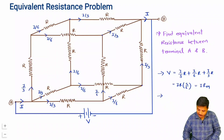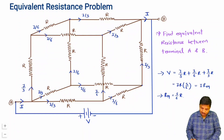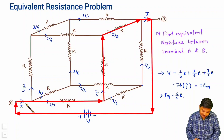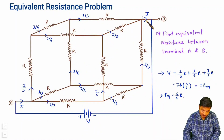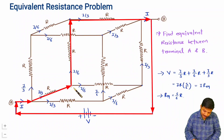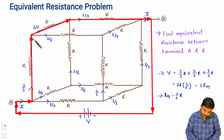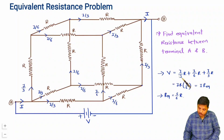Therefore, R_equivalent = 5R/6. This result holds for all paths. Whether you take this path or that path, each gives (I/3)·R + (I/6)·R + (I/3)·R, confirming that V = (5/6)·I·R and R_equivalent = 5R/6 by every route.